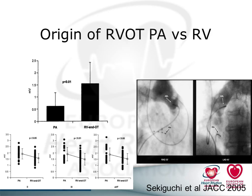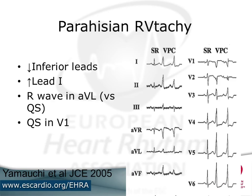Some people have tried to predict whether the RVOT origin is pulmonary artery versus RV. My view is that it doesn't really matter — pulmonary artery origins are pretty rare and you're going to be mapping anyway. The overlap between QRS complex sizes on inferior leads is so great that I wouldn't hold much store by this. It's pretty non-clinically relevant.